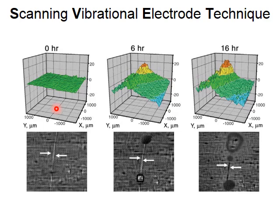Here you can see the quantitative results of a SVET measurement. The measurement is carried out above a metal surface with a protective barrier coating. In the photographs below, you can see the surface which has been scratched for the experiment. We study the corrosion process over time as a result of damage to the coating. The spatial distribution of the electric field can be seen in the three-dimensional diagrams above, showing how the electric polarization above the surface develops with time.